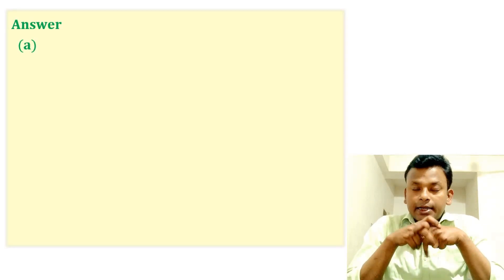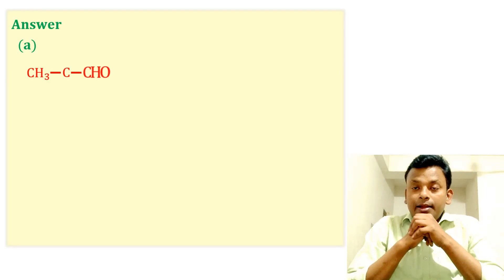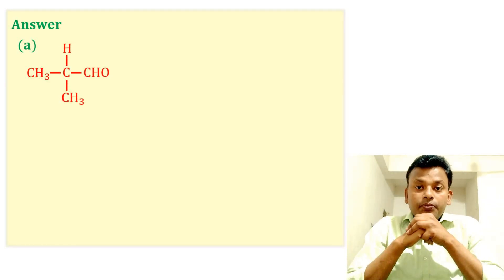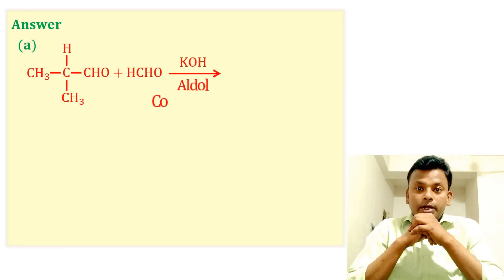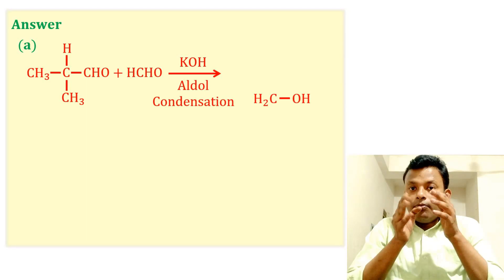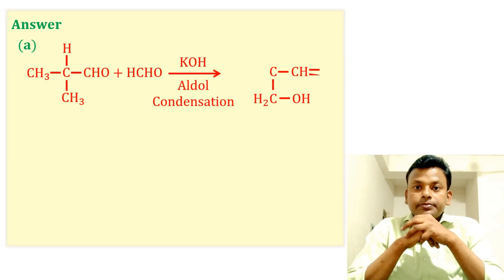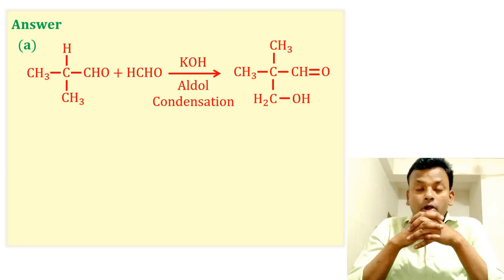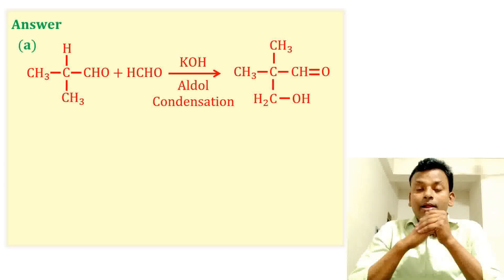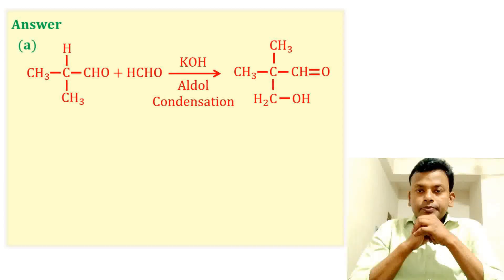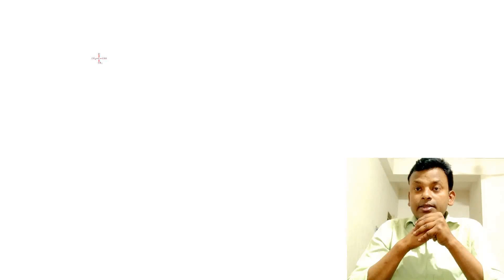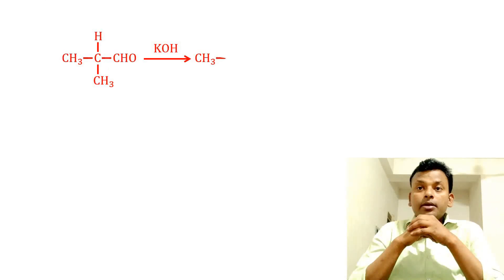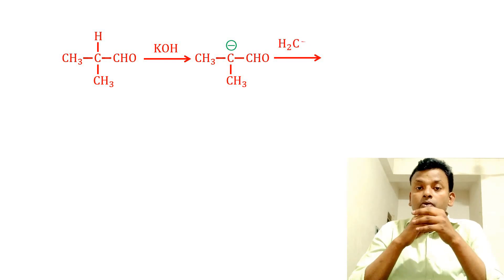Option A is the correct answer. That is, two methyl propanal reacts with formaldehyde in the presence of KOH. This is the aldol condensation reaction and this is the aldol product. Here two types of aldehyde are present: first, formaldehyde has no alpha hydrogen, and second, two methyl propanal has alpha hydrogen. So this aldehyde reacts with base, that is KOH, gives this anion, and this anion further reacts with and gives this product. This is the cross aldol condensation. Now back to the reaction.